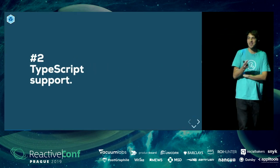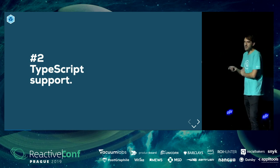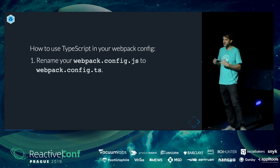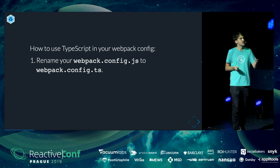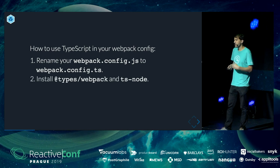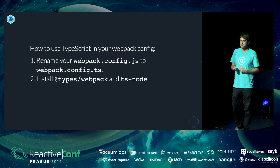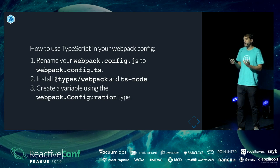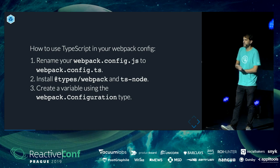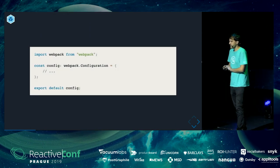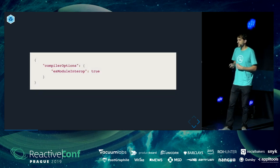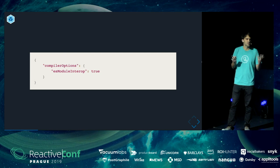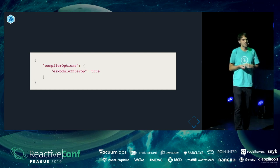Our next tip is that you can actually use TypeScript in your Webpack config. This is a feature a lot of people don't know. If you want to use TypeScript in your Webpack config, the first thing you do is rename your webpack.config.js to webpack.config.ts. Then you install the types, and you also need to install ts-node, which is necessary to execute TypeScript with Node. Then you create a variable using the Webpack dot configuration type. You also need to add the esModuleInterop flag — but you probably already have that. Almost all TypeScript configs have this flag on; it should probably be default.